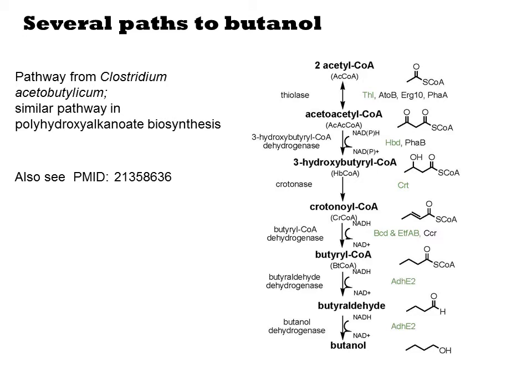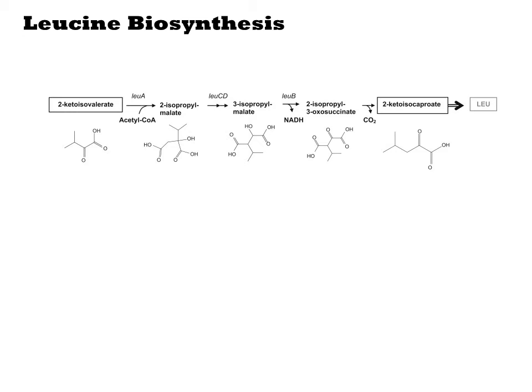The more typical route to n-butanol uses enzymes from the Clostridium butyrate pathway to generate butyryl-CoA. First, two molecules of acetyl-CoA undergo a Claisen condensation to generate acetoacetyl-CoA. This 4-carbon intermediate is reduced to the alcohol, then eliminated to the alkene, then reduced to the saturated butanoate chain. This sequence is very similar to the steps involved in fatty acid synthase production of larger alkyl chains. An enzyme from another organism performs these last two steps in which the thioester is reduced twice with NADPH to the alcohol.